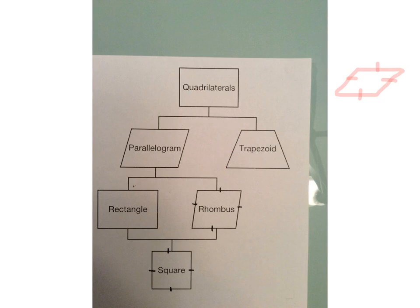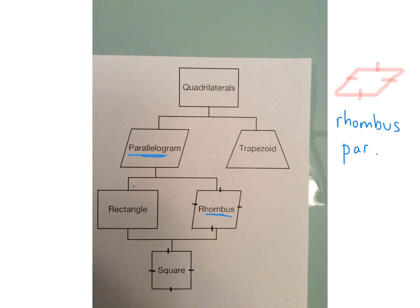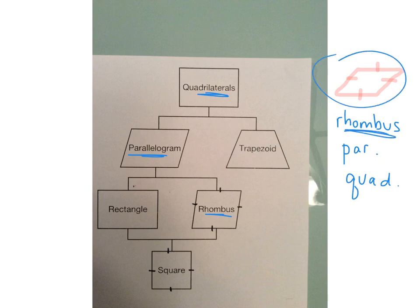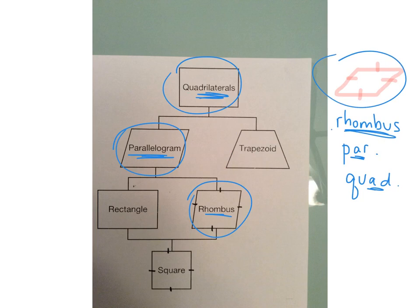Now here's a shape — this is definitely a rhombus. Let's name all the other names for it. It is also a parallelogram and also a quadrilateral. So this shape is a rhombus, but it's also a parallelogram and also a quadrilateral. If you look at the family tree, this rhombus falls underneath the parallelogram and underneath the quadrilateral. The best name for the shape is rhombus, but it is also a parallelogram and a quadrilateral.